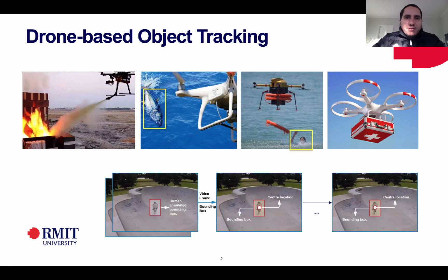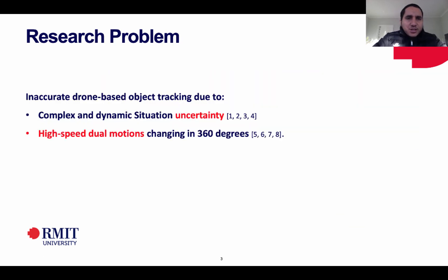Let's start by defining what visual object tracking is. We are given a series of frames — a video segment. We only have the bounding box annotated at the first frame, and the object tracking algorithm should continue predicting and estimating the center location and new bounding boxes in each successive frame till the end of the video. The research problem we are trying to solve is the inaccuracy of drone-based object tracking due to complex dynamic situation uncertainty and high-speed dual motions: the drone is moving, and the camera gimbal itself is also moving in different directions, besides the moving tracked object itself.